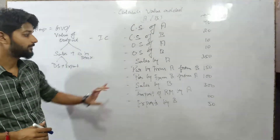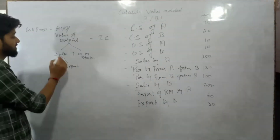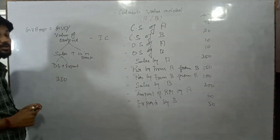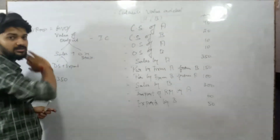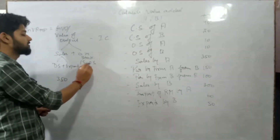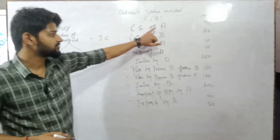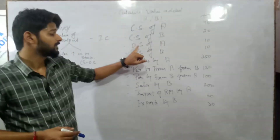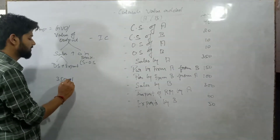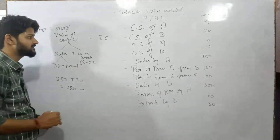First, we calculate the value added by Firm A. Change in Stock equals Closing Stock minus Opening Stock — a formula you have studied many times in accounts. Closing Stock of A is 40 lakh and Opening Stock of A is 10 lakh, so 40 minus 10 gives 30 lakh, which will be added. So the total Value of Output becomes 380 lakh.